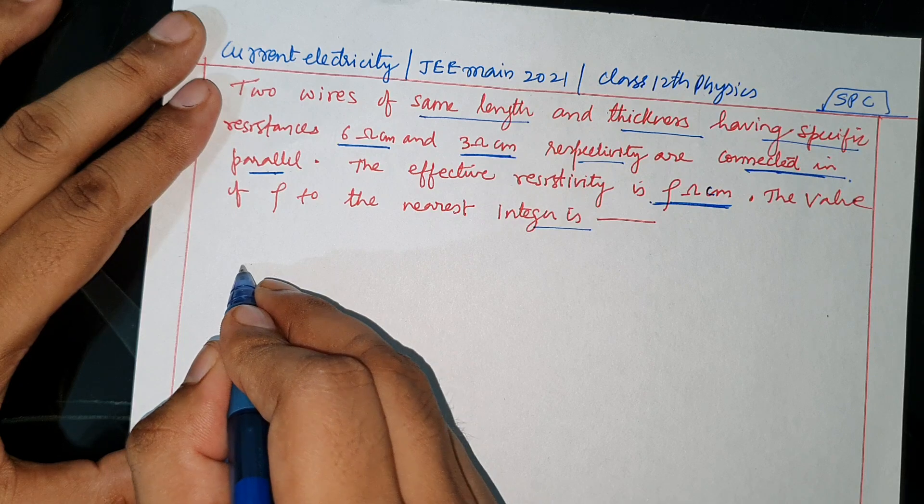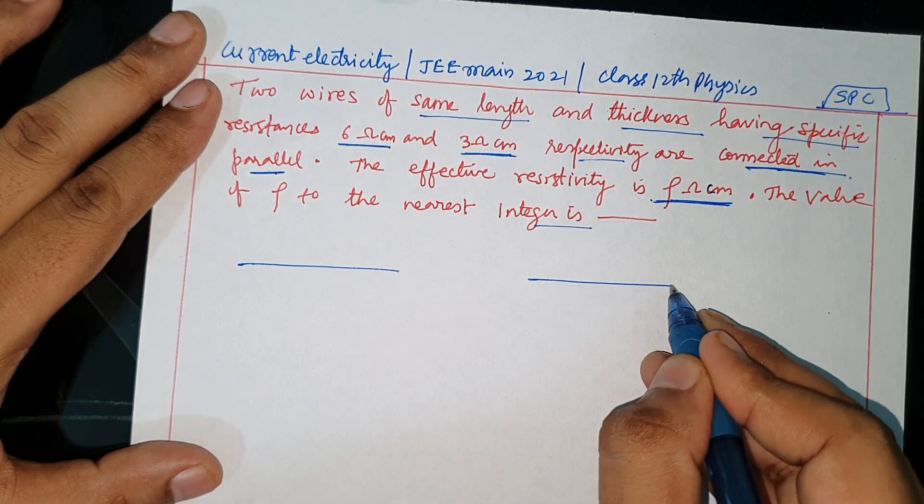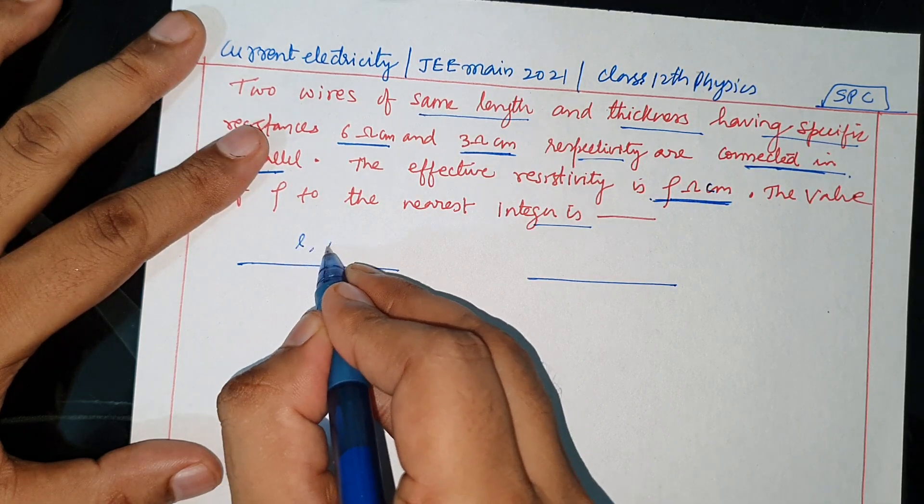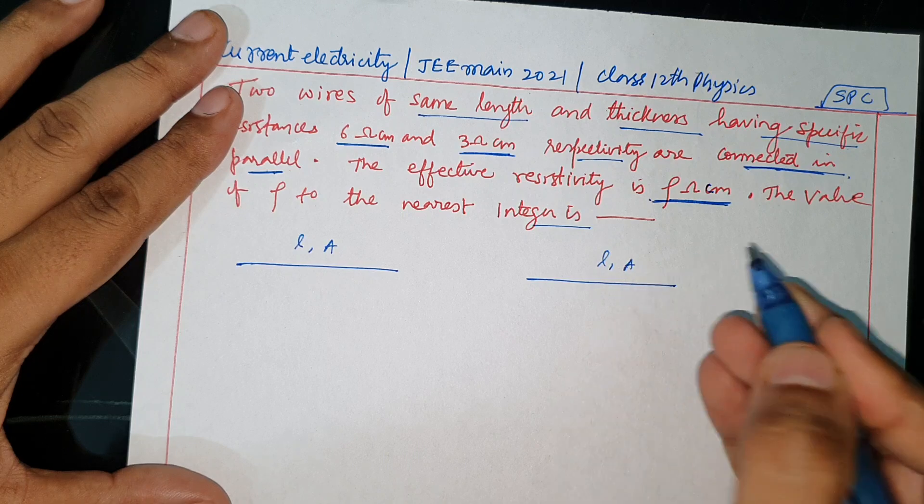So there are two wires here, one wire here and the other wire here. This length and area of cross section, thickness same, that means area of cross section same, length and area of cross section same.